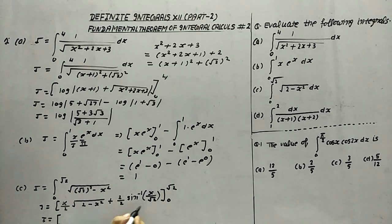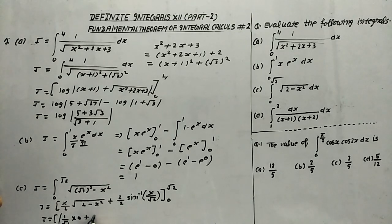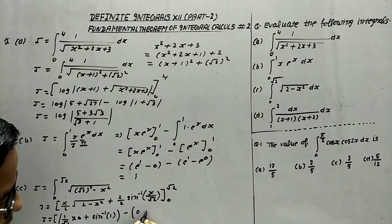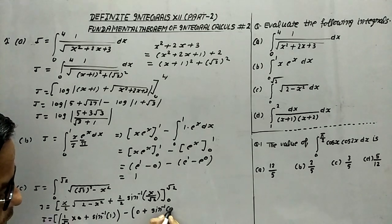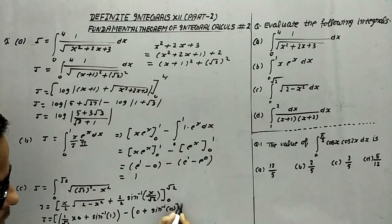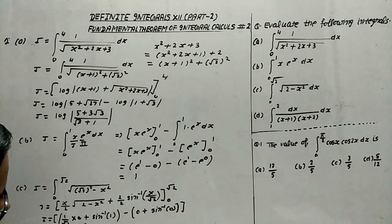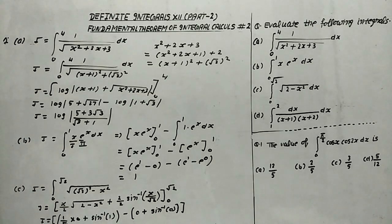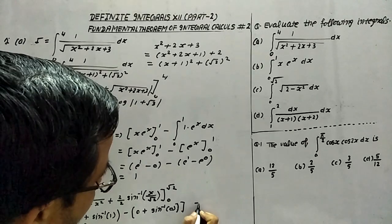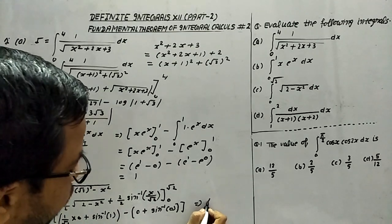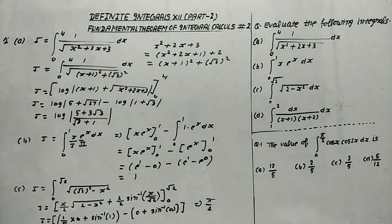Applying the upper limit x = √2: the term (√2/2)·√(2−2) becomes 0, plus sin⁻¹(1). Applying the lower limit x = 0: everything becomes 0 plus sin⁻¹(0), which is 0. Since sin⁻¹(1) = π/2 and all other terms are 0, the answer for this part is π/2.